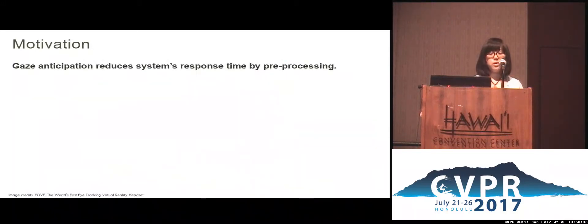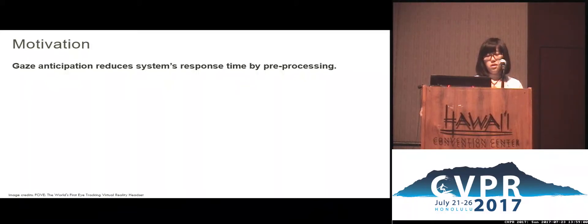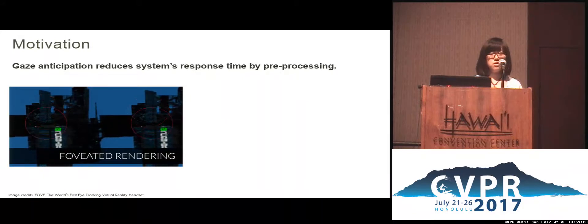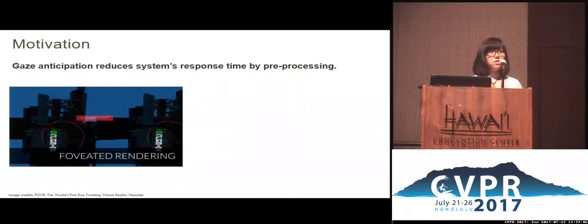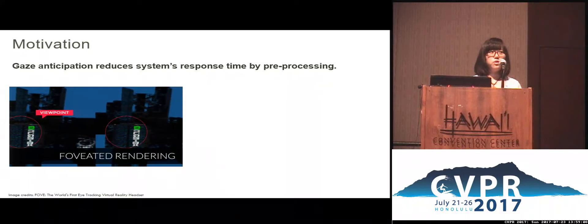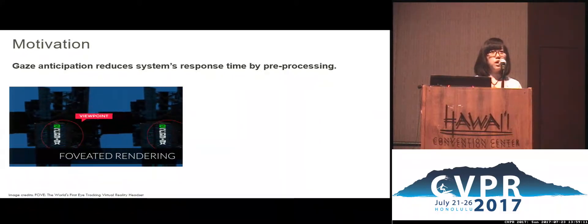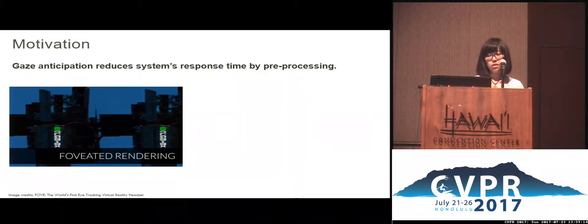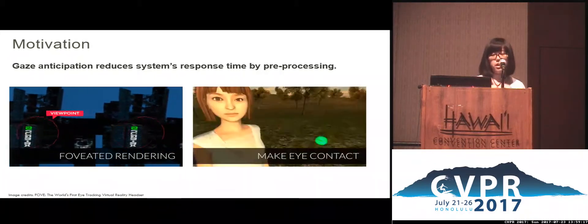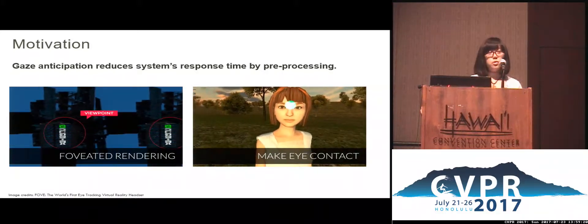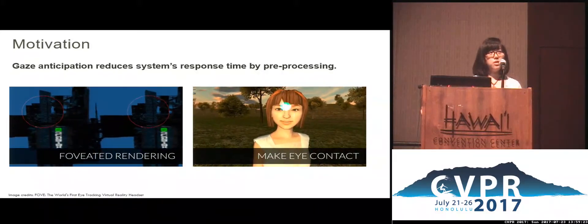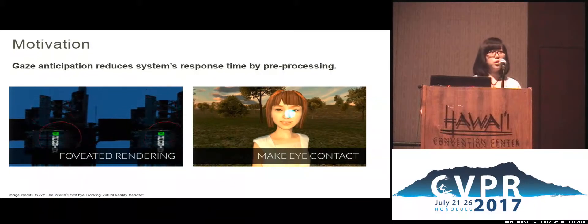Another motivation for why we study gaze anticipation is that it could reduce system response time by pre-processing information. I'd like to take FOV as an example. FOV is the world's first VR eye-tracking headset. FOV uses attention to render environments with foveated rendering. With gaze anticipation, this could provide FOV with more buffer time to selectively pre-allocate computational resources. Similar ideas of buying more time could be applied in e-commerce, where the information server could pre-fetch advertisements and prompt them to consumers without time delays.